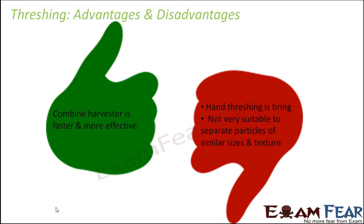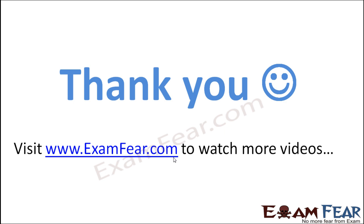Threshing has its own advantages and disadvantages. Automated machines like the combine harvester are definitely faster and more effective. Hand threshing, however, is very tiring. Also, threshing is not suitable for particles of similar sizes and textures — it works only when grains and stocks are very dissimilar to each other. If you have grains mixed with small husks, small stones, or small leaf-like structures, beating will not serve the purpose of separation.